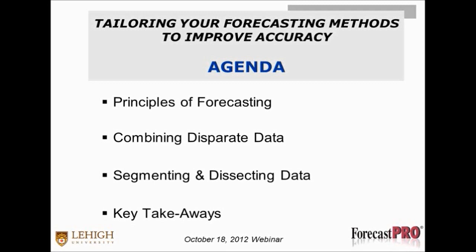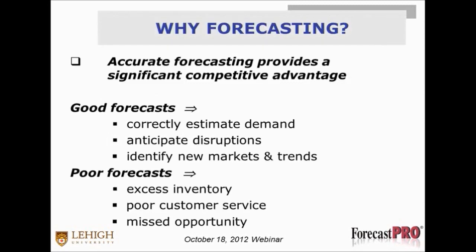What I wanted to do was talk about some key things in the time that we have. The first is principles of forecasting — we know that following some very simple basic rules really helps in terms of accuracy. Second, I want to talk about combining disparate data from different sources that bring different kinds of information. And last, I want to talk about segmenting and dissecting data, which really allows us to take advantage of the 80-20 principle. We understand that most of the results come from fewer items.